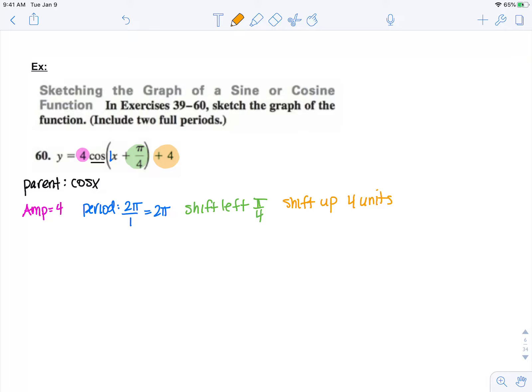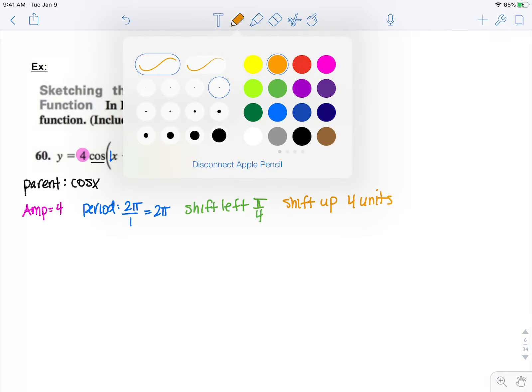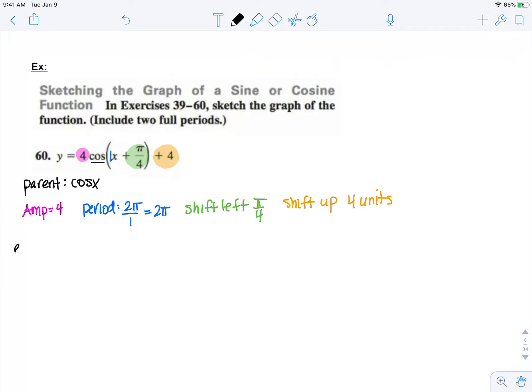Since we're shifting to the left, the endpoints of my period are going to change, so let's find those endpoints of that first period. Normally we would start at 0, but since we're shifting to the left pi over 4, we would subtract pi over 4 to see that we're beginning at negative pi over 4.